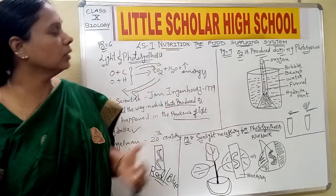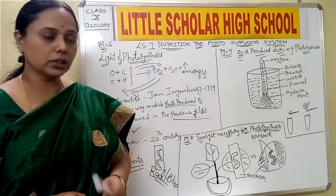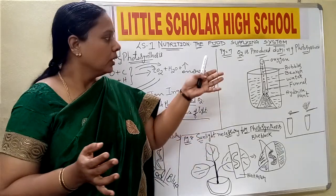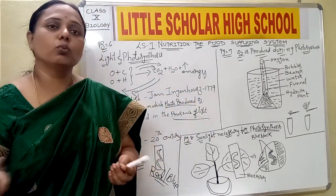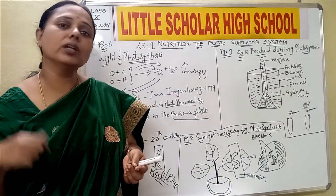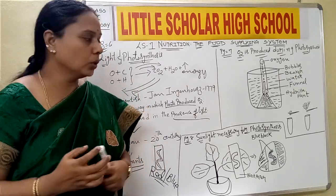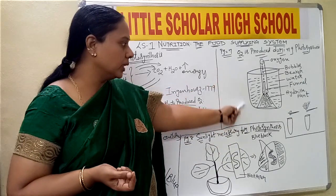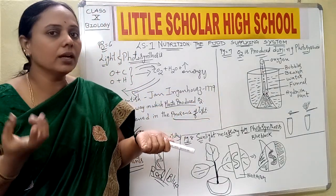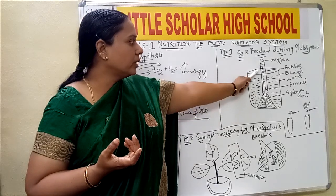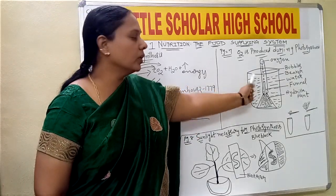Now let us move to the activity on page number 7, which proves that oxygen is produced during photosynthesis. We need two setups for this experiment — one conducted in the presence of light and one in the dark — which gives a clear result and exact conclusion. For this experiment, you need a beaker filled with water and a funnel. Fix the hydrilla plant in the funnel, then take a test tube filled with water and carefully invert the test tube on the stem of the funnel.